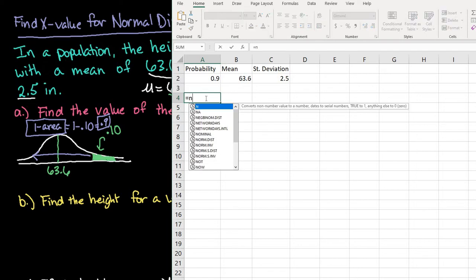So what I'm going to type is equals and I'm going to start typing norm. And for this one I want the dot inverse. I do not want the dot s dot inverse because I'm not looking for a z score. So I'm actually looking for an x value. So I'm going to select the norm dot inverse.